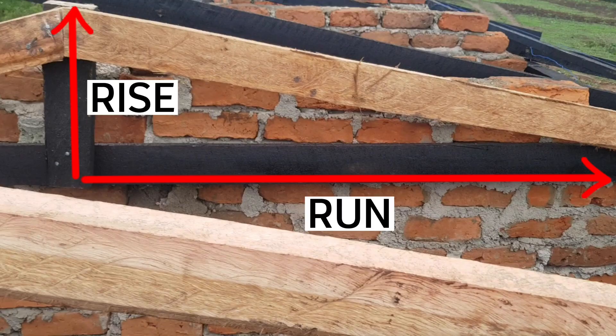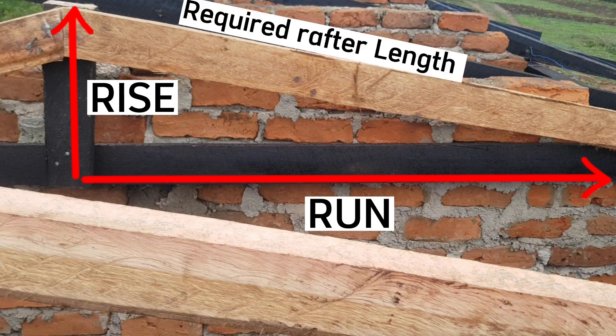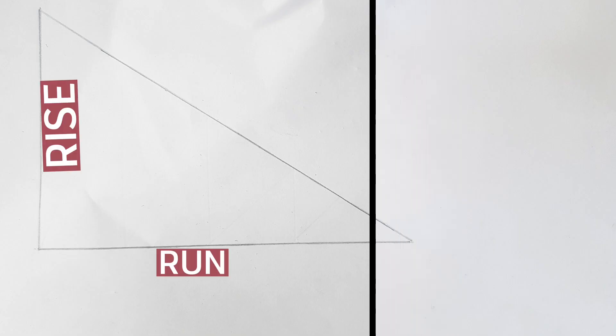For this method we have this simple math. As you can see, this is the rise, the run, and the rafter length. These make up three sides of a right angle triangle. If we know two lengths of the triangle, then we can use Pythagoras theorem to work out the length of the other.